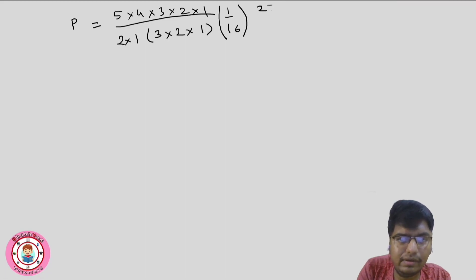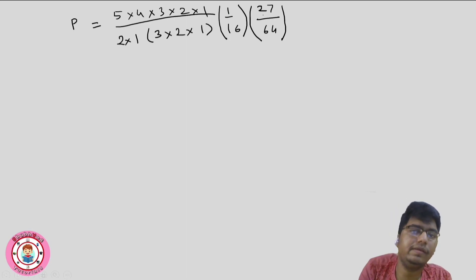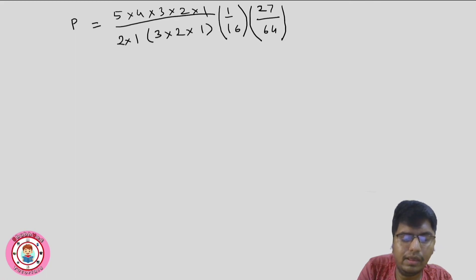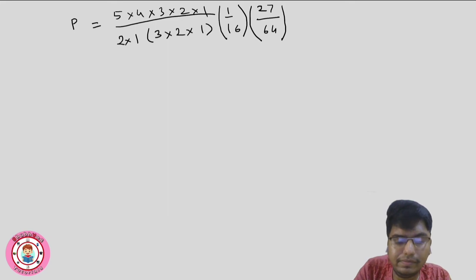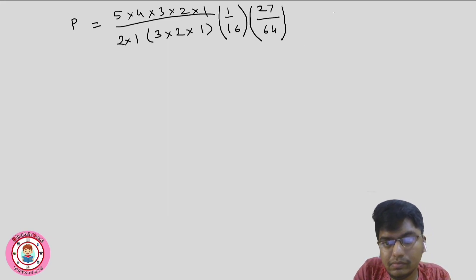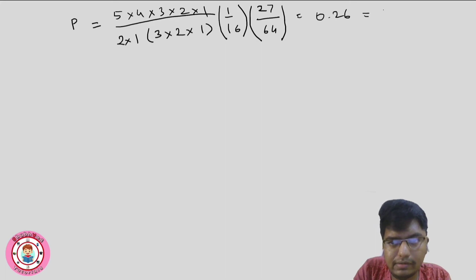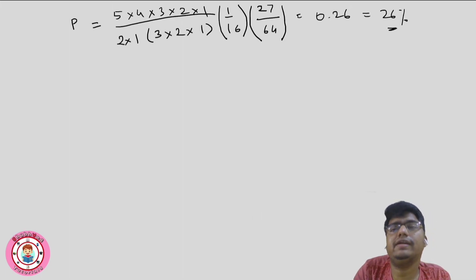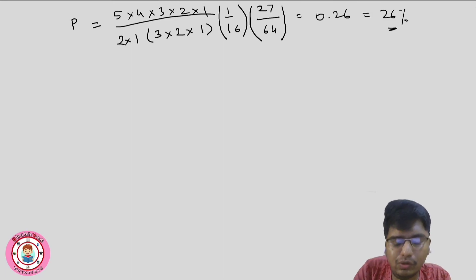3/4 cubed gives 27/64. After calculating everything together, we get 0.26, that is 26%. That is how we find the probability using the binomial expansion rule.